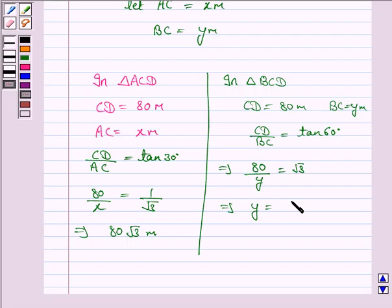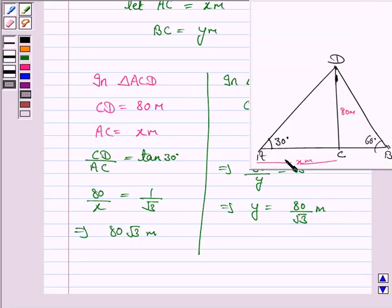This is tan 60 degrees. CD is 80, BC is y and tan 60 degrees is root 3. So this implies y is equal to 80 by root 3 meter.